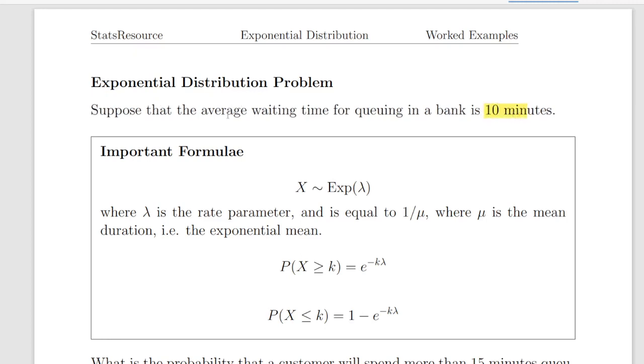So average waiting time, waiting time is something that we would model using the exponential distribution. So the exponential mean here is 10 minutes. The waiting time is x, we're going to call that x, and it's the waiting time in a queue in the bank. And the average value of x, the expected value of x, is 10. The exponential mean.